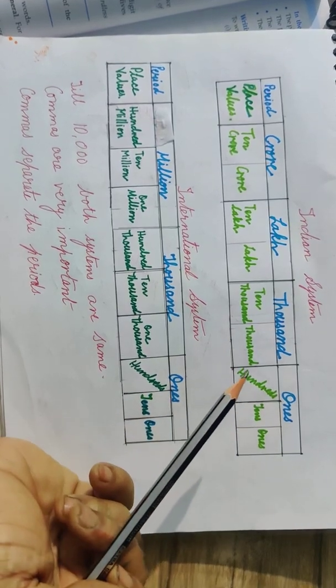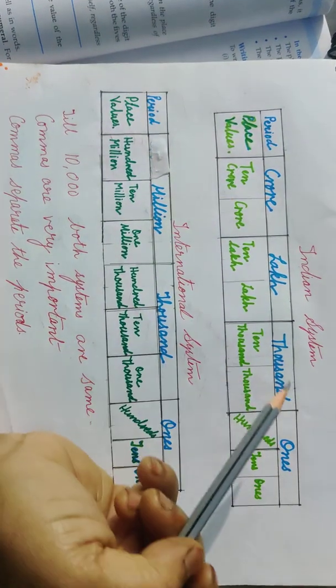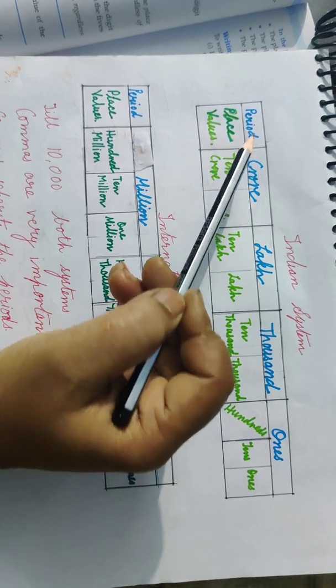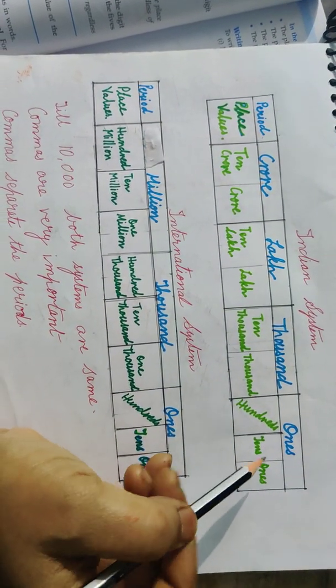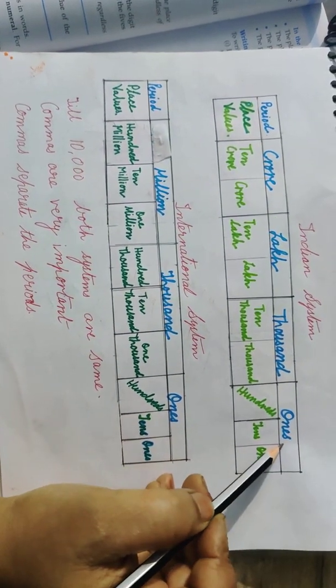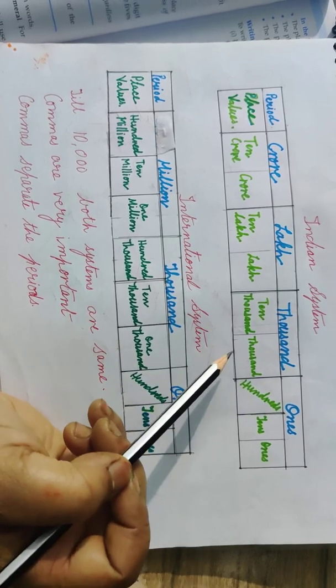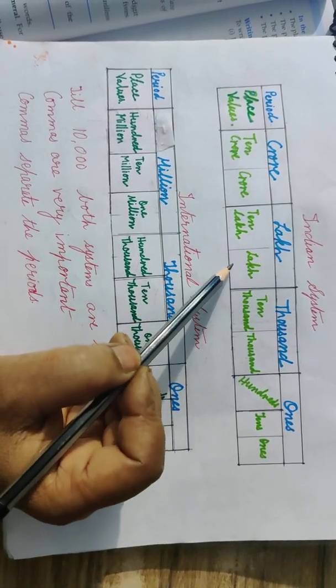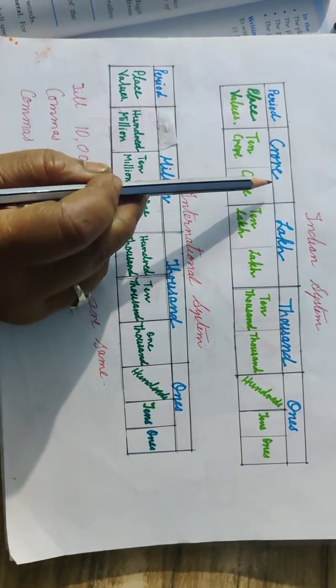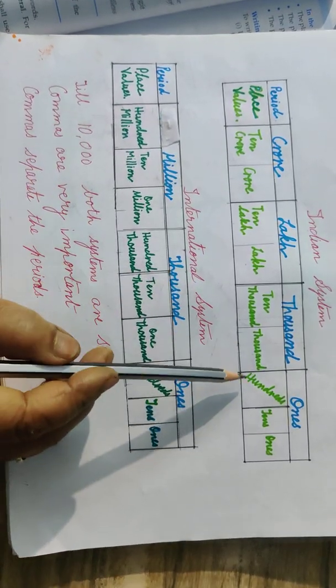In the Indian system, there are two key concepts in numeration: period and place value. We have already studied the ones period and the thousands period in previous classes. Now we are adding the lakh period and the crore period. The ones period has three places: ones, tens, and hundreds. The thousands period has two places: thousands and ten-thousands. The lakh period has two places: lakhs and ten-lakhs. The crore period has two places: crores and ten-crores.